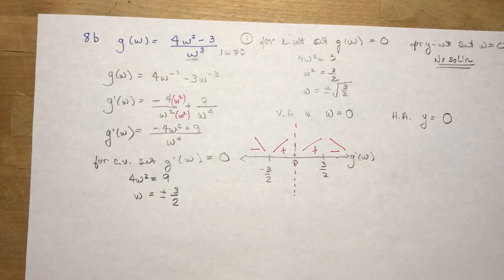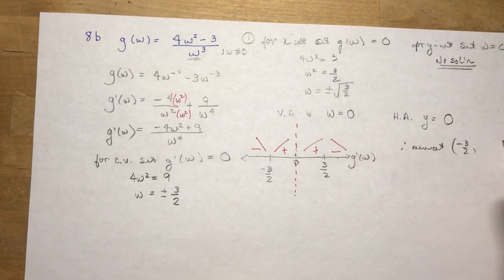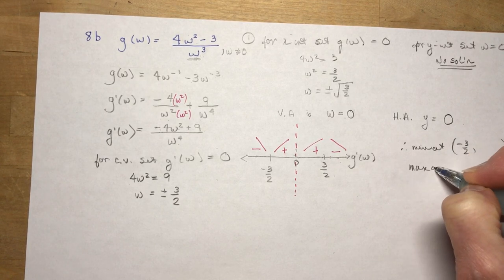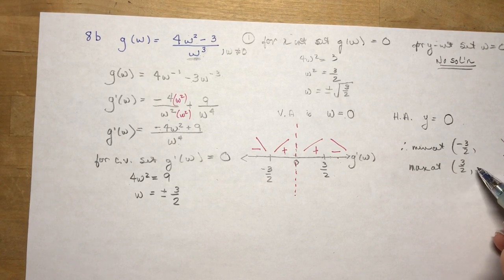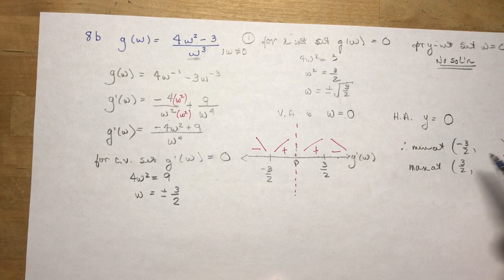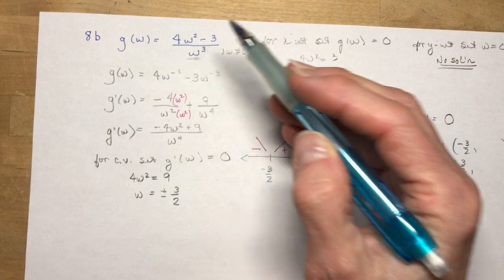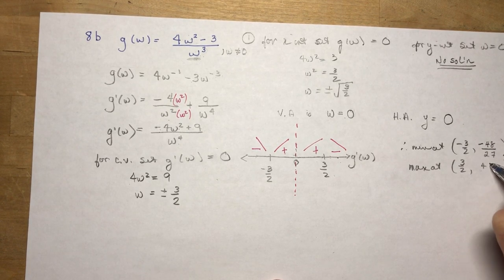So this means I have a minimum at w = −3/2 and a maximum at w = 3/2. For the y-coordinates, plug these back into the original function — not the derivative. I'll tell you the answers to save time: I get −48/27 and +48/27.